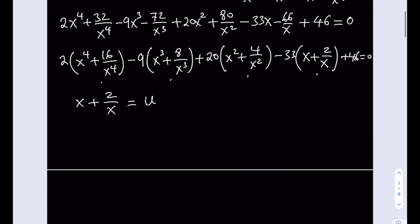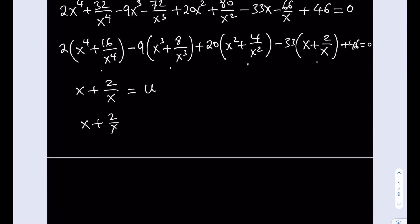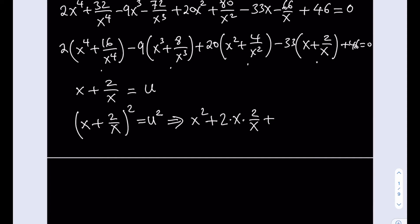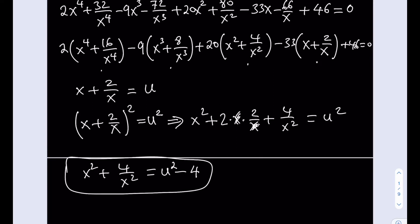For example, I have x squared plus 4 over x squared. If I square x plus 2 over x, I should get u squared. Squaring gives x squared, then 2 times x times 2 over x — the x cancels giving 4 — plus 4 over x squared, which equals u squared. So x squared plus 4 over x squared plus 4 equals u squared, and subtracting 4 from both sides gives x squared plus 4 over x squared equals u squared minus 4.